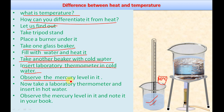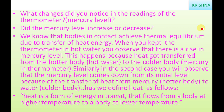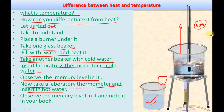Now we take the laboratory thermometer and insert it in the hot water. See — the mercury level slowly increases. It is no longer at 30°C. When placed in hot water, the mercury rises and becomes steady at 80 degrees centigrade. This means the hot water and the mercury in the thermometer are at thermal equilibrium at 80°C.